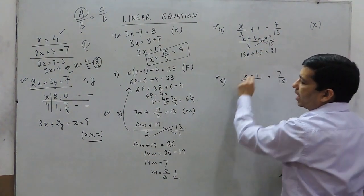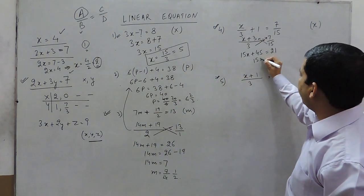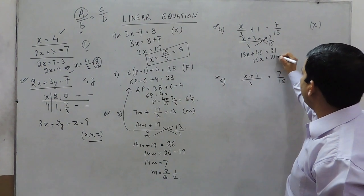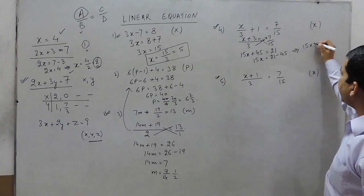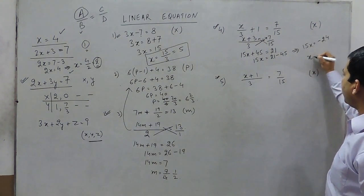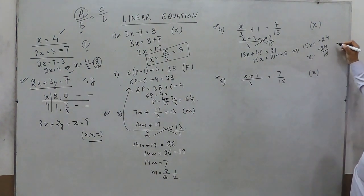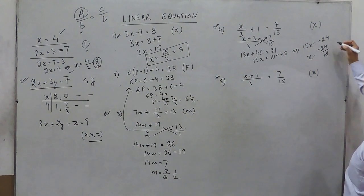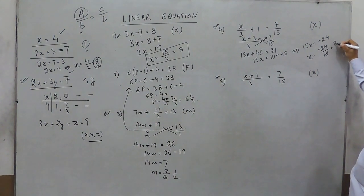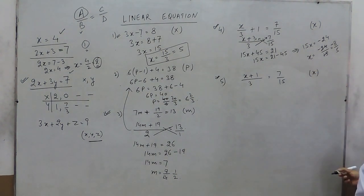This equation is now convertible to the first and second type. So 15x equals 21 minus 45, which gives 15x equals minus 24. The value of x becomes minus 24 upon 15. Cancelling by 3, this becomes minus 8 upon 5. So the answer is minus 8 upon 5 for x.